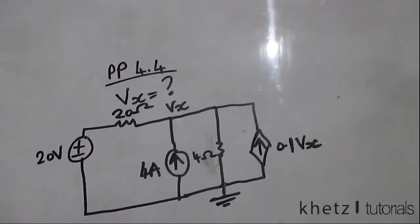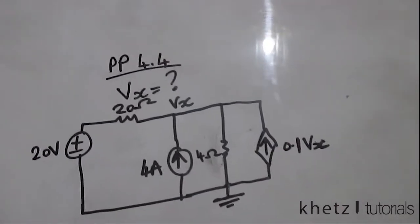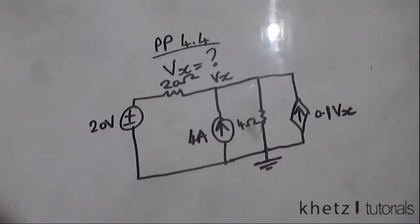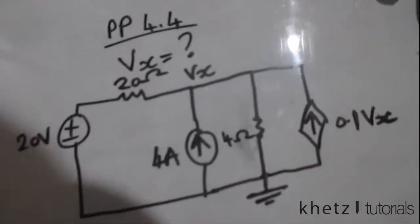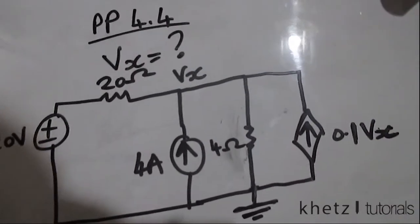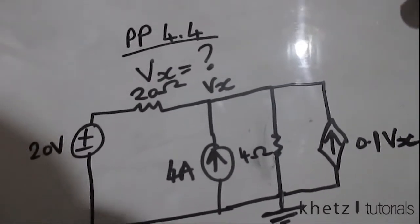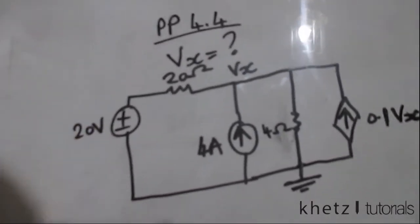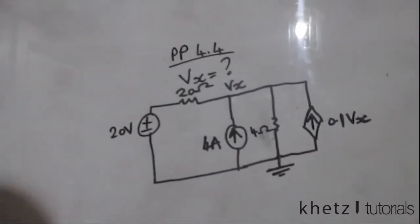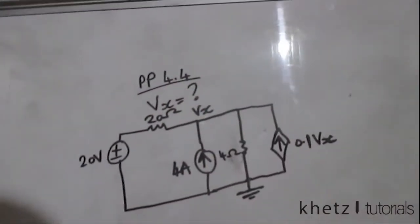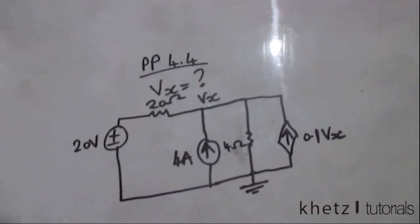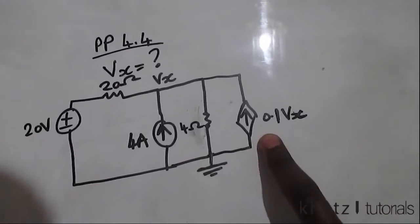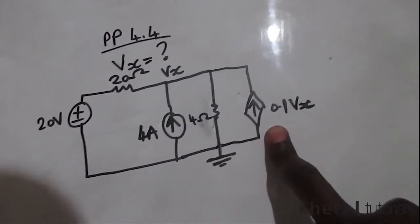Welcome to CATS Tutorials. In this video I'll be covering practice problem 4.4, and we are asked to find Vx using superposition. We can use any other method, but we are specifically asked to use superposition, and therefore we deal with one independent source at a time. We have a dependent source in this case, which remains intact no matter what.